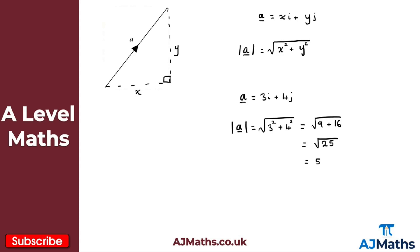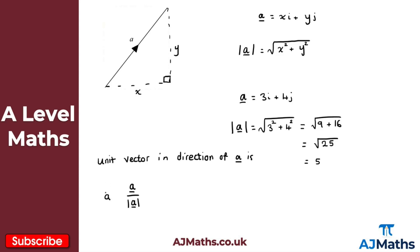Now we also want to understand what a unit vector is. A unit vector in the direction of a is given by the vector a divided by the magnitude of vector a. Sometimes we use the notation â — a with a little hat above it — to represent the unit vector. You might not always see this, but just in case you come across it, that's what it represents.